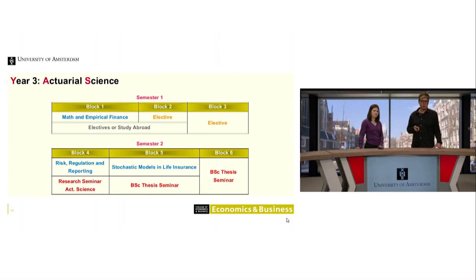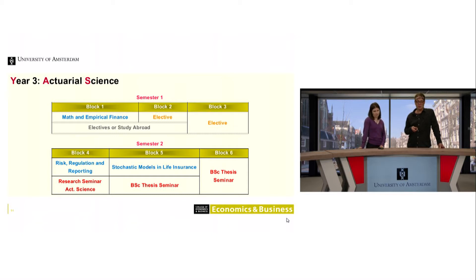For Actuarial Science, it's the same structure: one course in block one — Mathematics and Empirical Finance — and the possibility to go abroad or take courses from international partner universities. The second semester is largely devoted to the Research Seminar and finalizing your thesis.